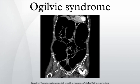Laplace's law states that T = P × R / W, where T equals wall tension, P equals pressure, R equals radius, and W equals wall thickness. The wall tension is proportionate to the radius. Therefore, a dilated intestinal segment has a greater wall tension than a non-dilated segment. If the dilatation and tension are sufficiently great, blood flow may be obstructed and ischemia of the bowel will occur.